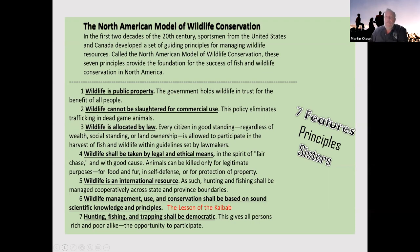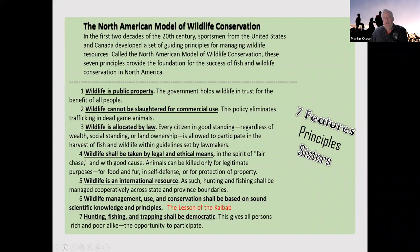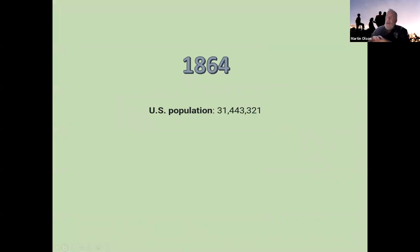Number six — wildlife management should be based on sound scientific knowledge, which we'll explore through the lesson of the Kaibab. Number seven — hunting, fishing, and trapping shall be democratic, giving persons rich and poor alike the opportunity to participate.